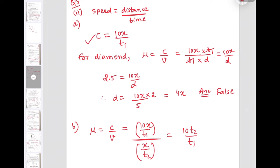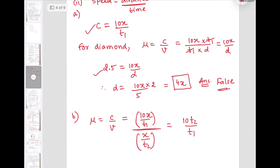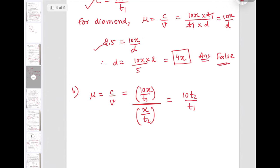By taking mu as 2.5, we can find the distance traveled by light in diamond, that is coming out to be 4x. Whereas here in the question, it is stated that the distance will be 20x. So that statement is false. Next sub-question: calculate the refractive index of the medium in terms of T1 and T2. So mu equals C by V, C is 10x upon T1 and V equals x upon T2. On simplifying, we get 10 T2 upon T1.